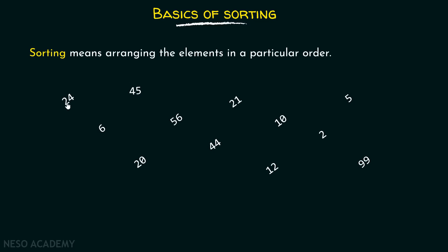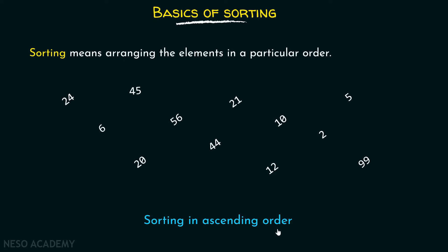Let us suppose these are the elements we have currently and they are randomly placed. Our target is to sort them in ascending order. That means the smallest element will come at the first position. Let's find out the smallest element — you can see that this is the smallest element.